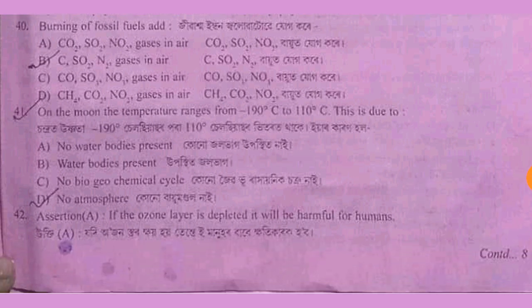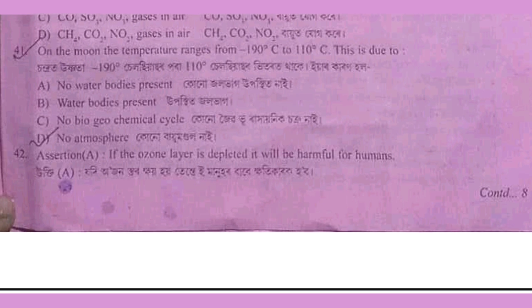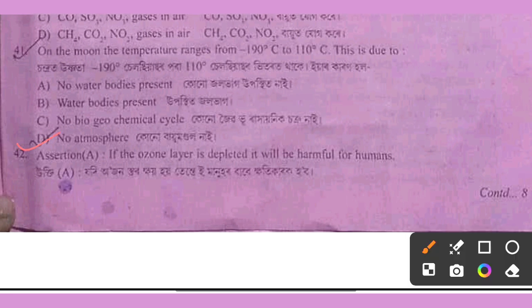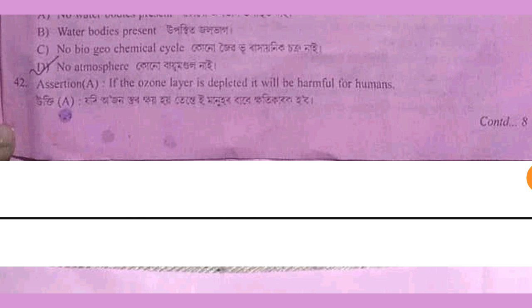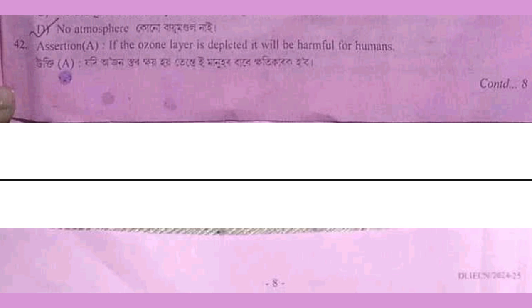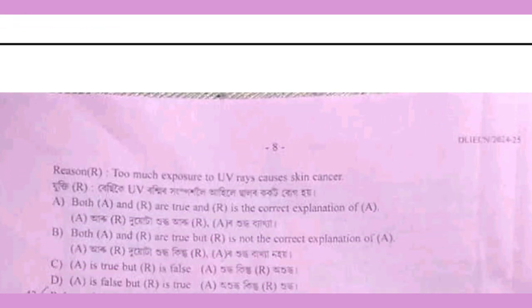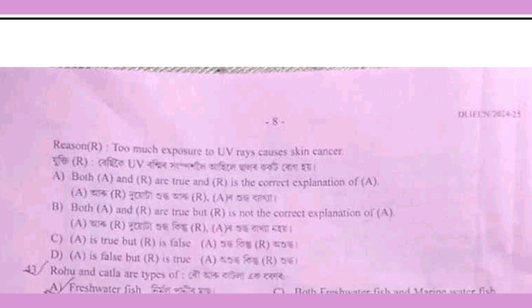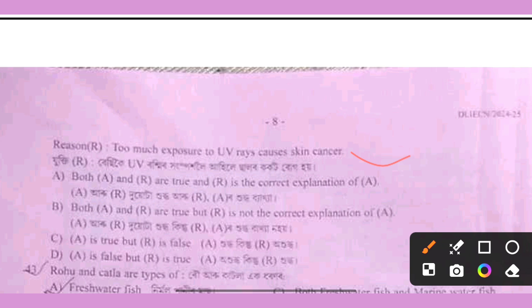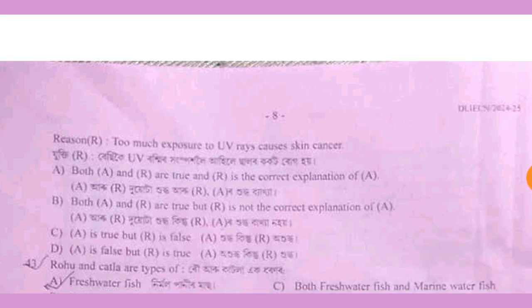The moon's temperature ranges from minus 190 degree Celsius to 110 degree Celsius. This extreme temperature range is due to the moon having no atmosphere. If the ozone layer is depleted, it will be harmful for humans because of increased exposure to UV radiation, which causes skin cancer.